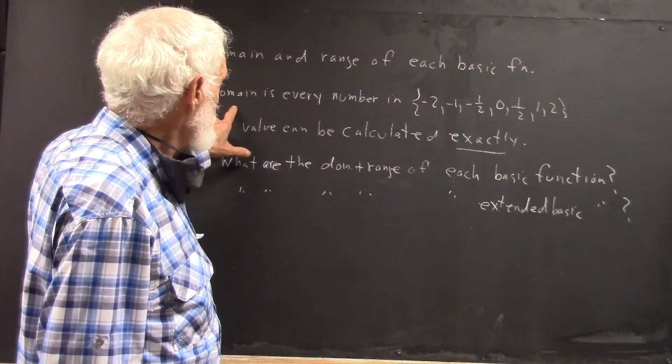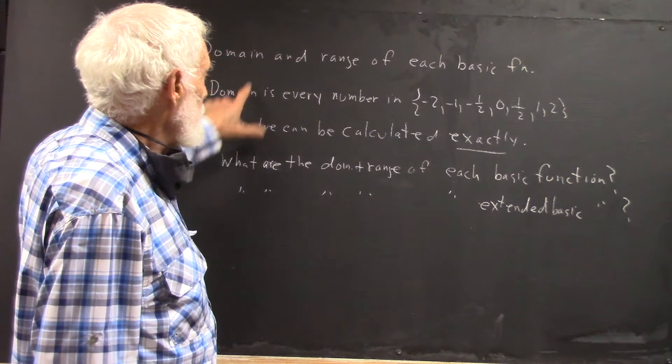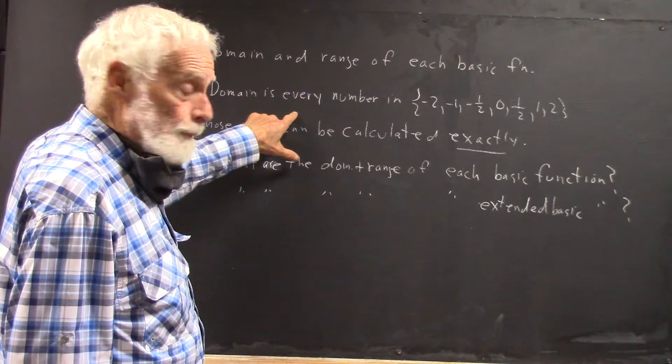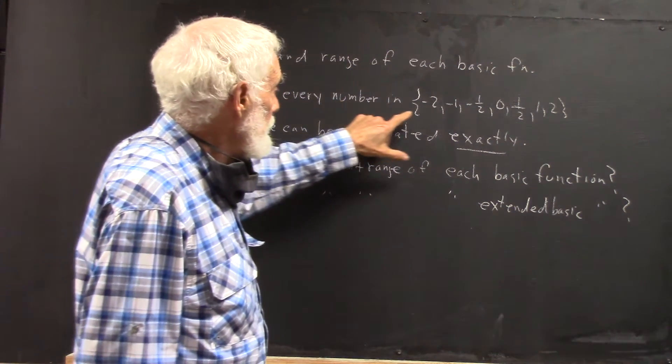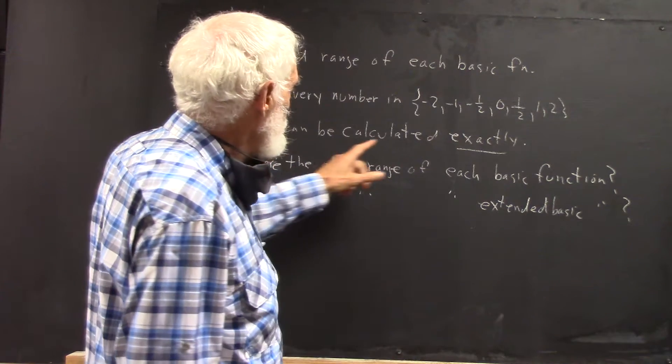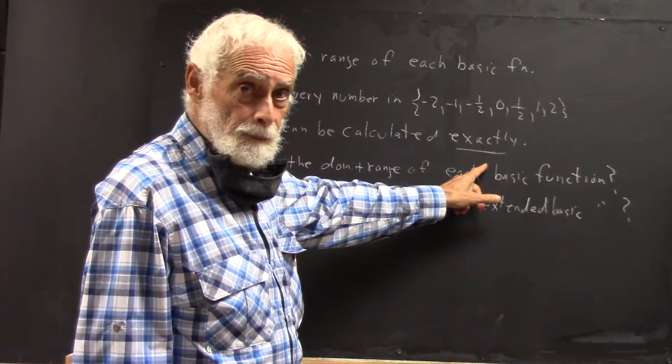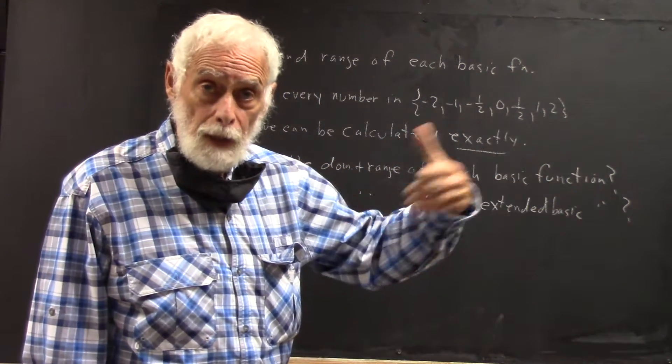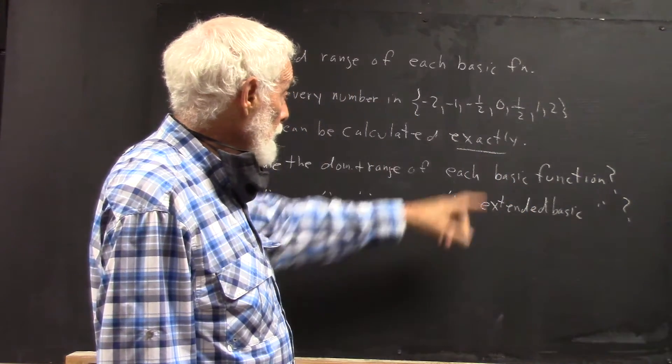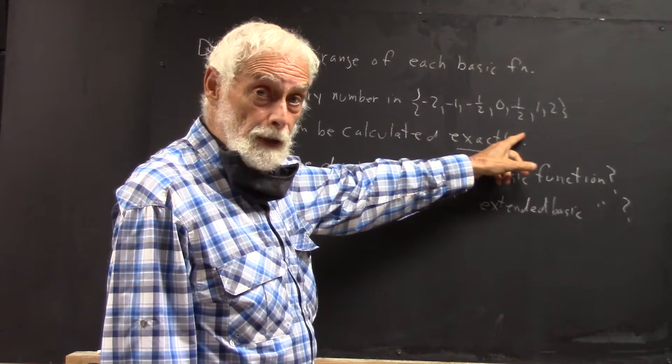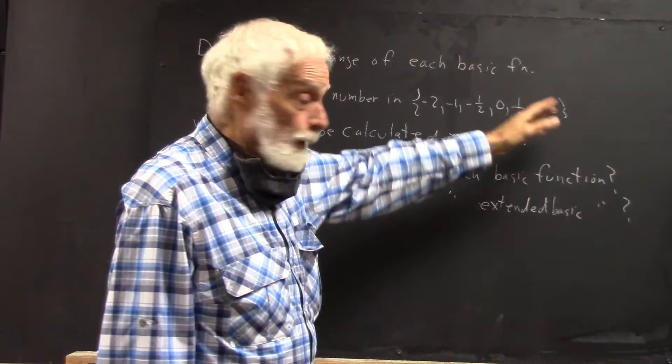But the domain of any of these basic functions is going to be every number in the set whose value can be calculated exactly. Now, you just saw the two to the x can't be calculated exactly if x is negative one-half or one-half. It can for the other five numbers in this set.